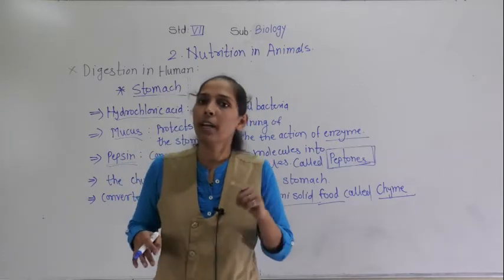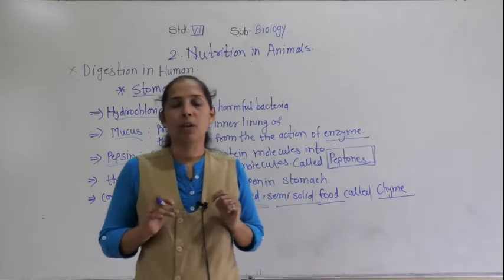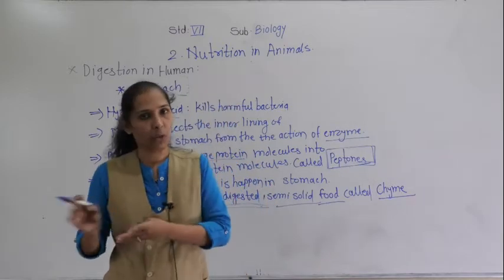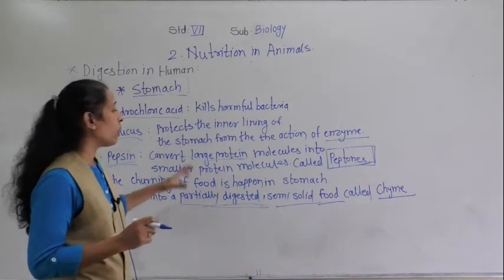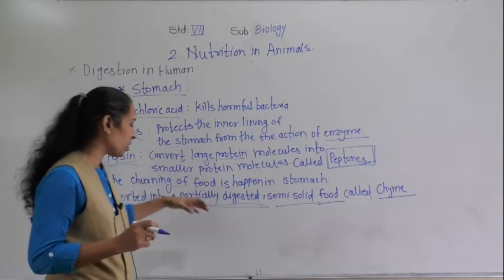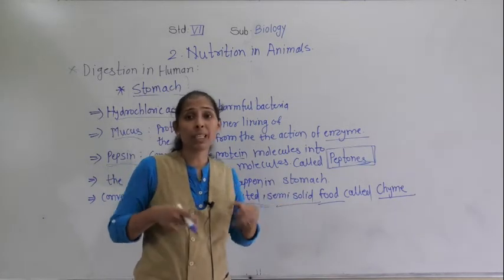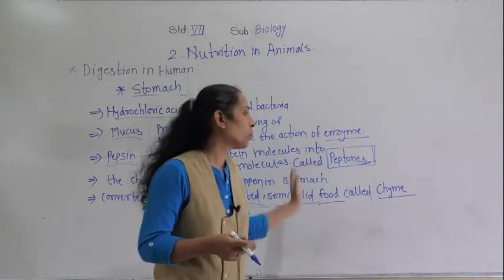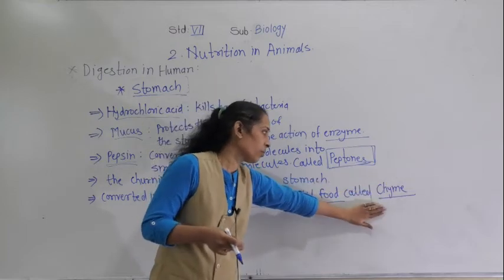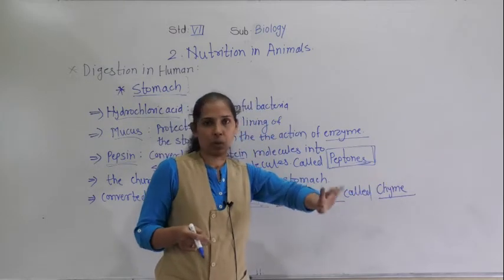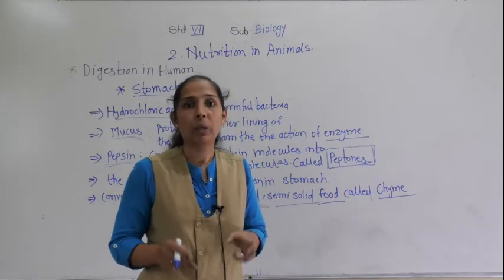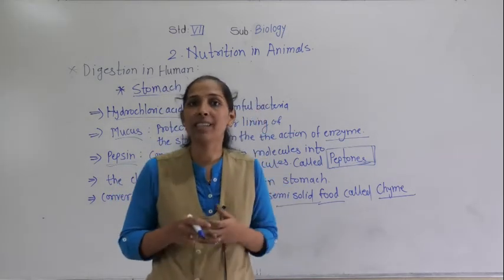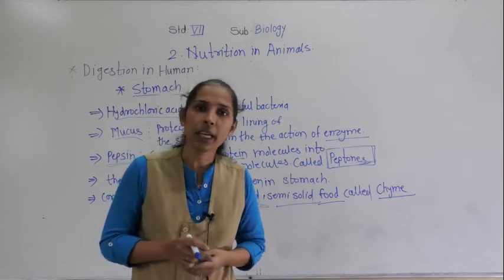The chyme — partially digested semi-solid food — is then passed to the next digestive organ, the small intestine, which will be discussed in the next video. This is all about the stomach. The paste of semi-solid food called chyme gets transferred from the stomach to the small intestine. Thank you.